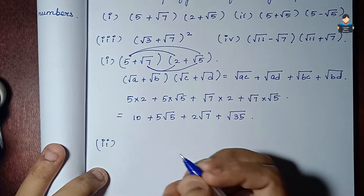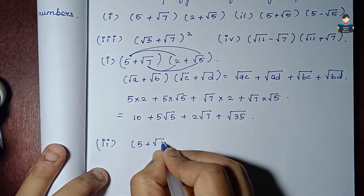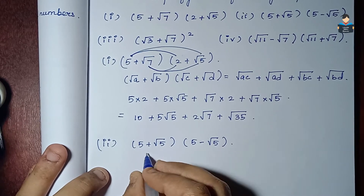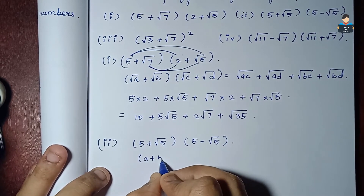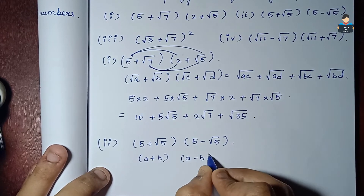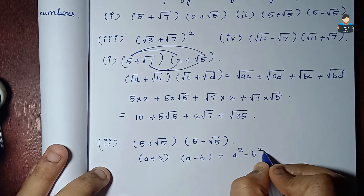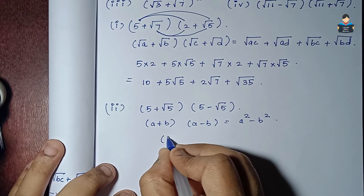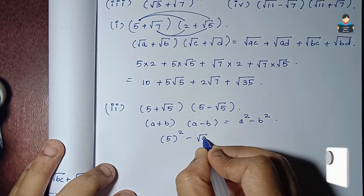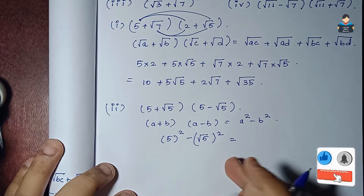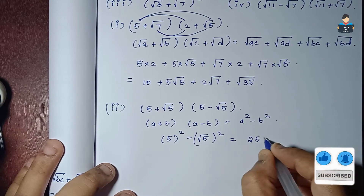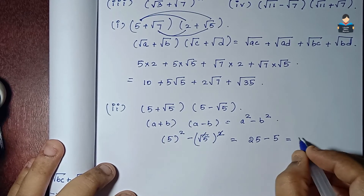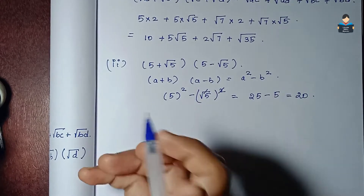Second subdivision: (5 + √5)(5 - √5). This is of the form (a+b)(a-b) = a² - b². So we get 5² - (√5)² = 25 - 5 = 20.